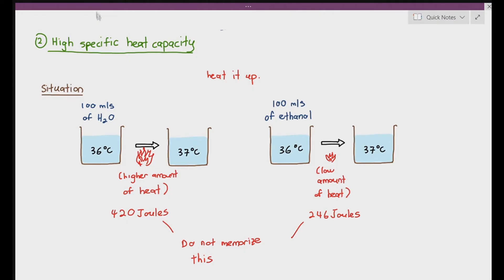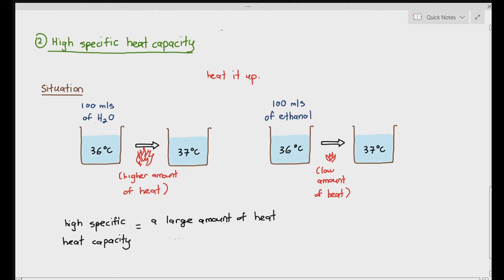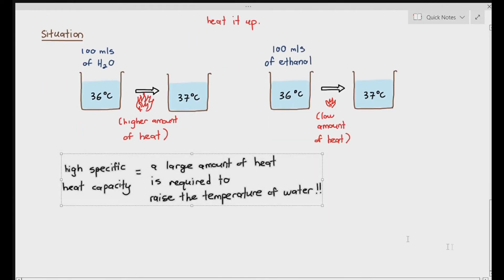Isn't that a bit weird? You just need a low amount of heat to increase the temperature of ethanol, but you need a higher amount of heat to increase the temperature of water, even though both had the same volume. What it means is you actually need more energy to make water's temperature increase. By understanding this, we can say that water has a higher specific heat capacity — water basically needs a large amount of heat to raise its temperature by 1 degree Celsius.